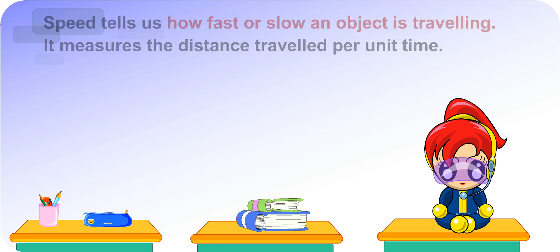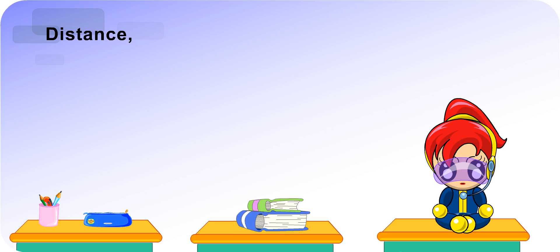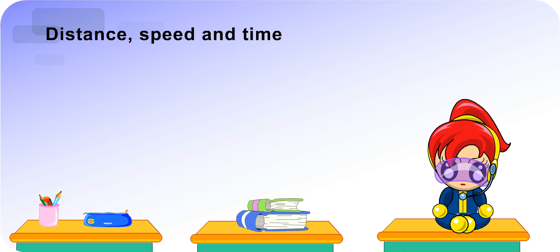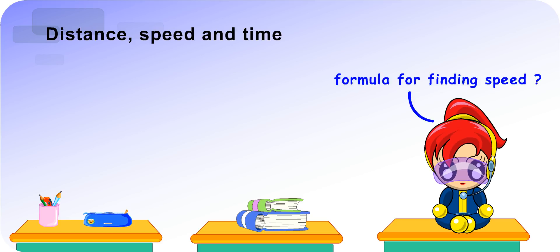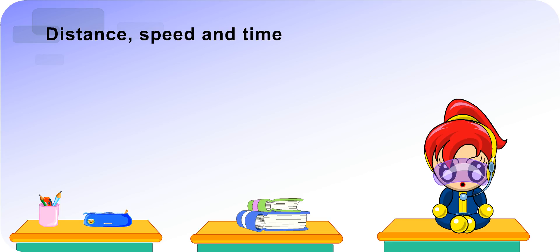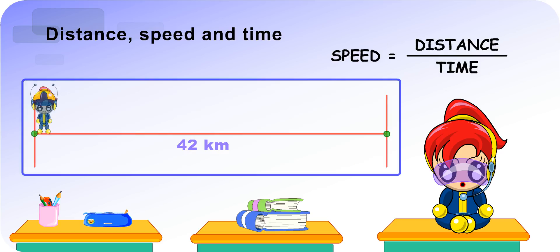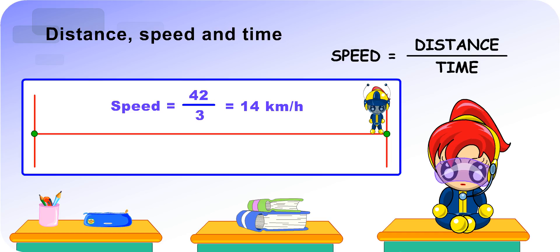We will now look at the relationship between distance, speed and time. Do you know the formula for finding speed? I think speed equals distance divided by time. For example, I took 3 hours to run a 42 km marathon. So, my speed is 42 divided by 3, which is 14 km per hour.